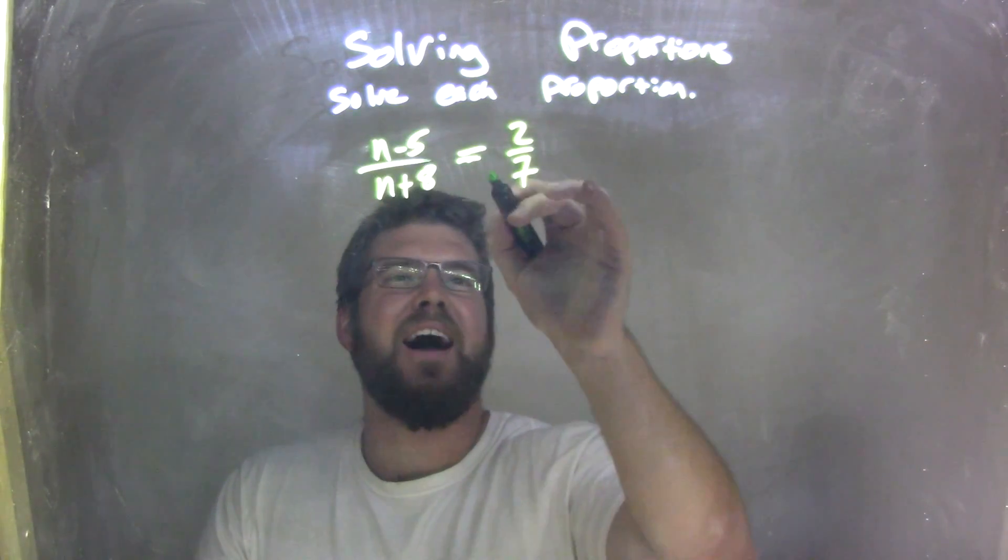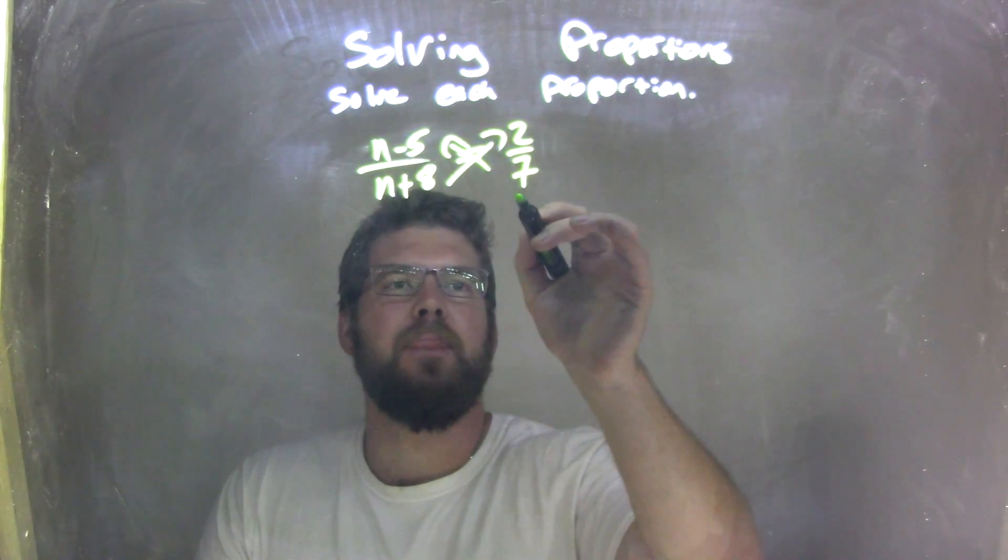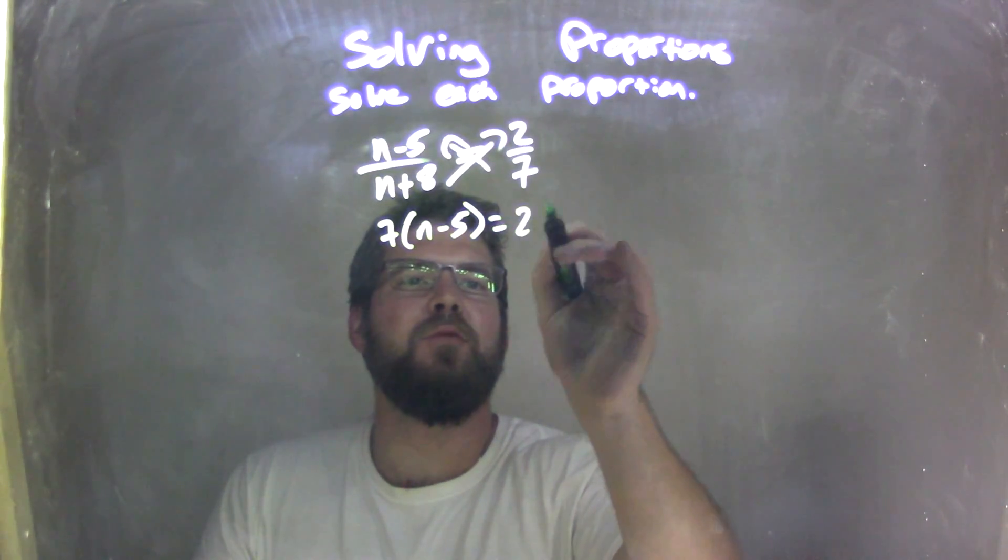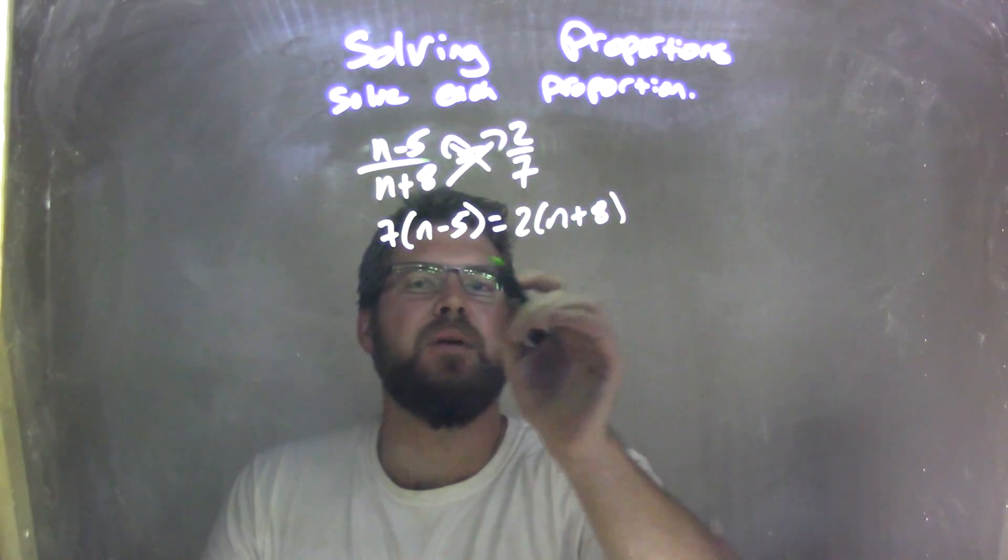Well, first thing, I need to cross-multiply. So I have 7 times n minus 5 equals 2 times n plus 8.